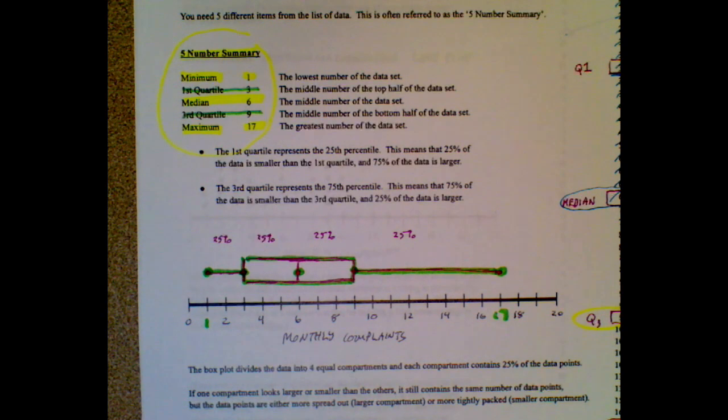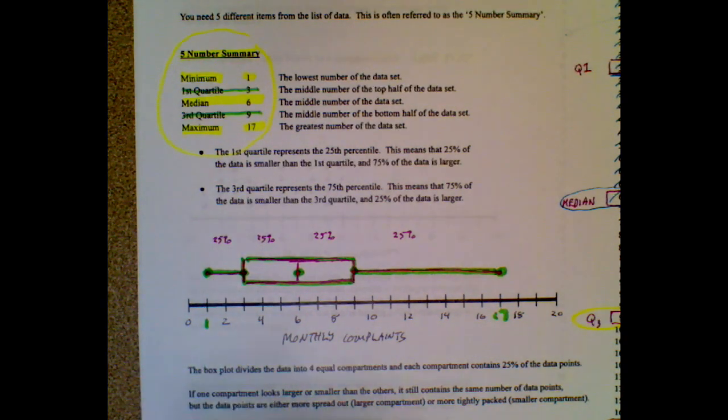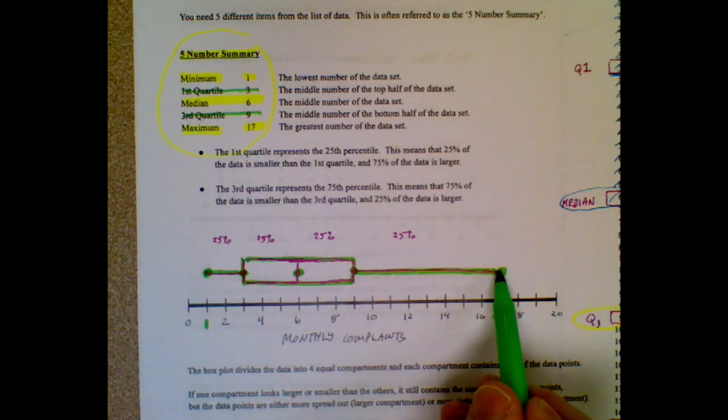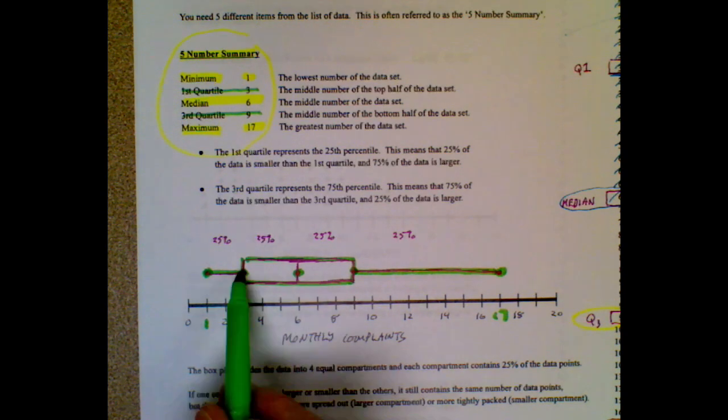This is your box plot, but what it does is it categorizes your data into 25% chunks. This bottom chunk has 25% of the data. This top chunk has 25% of the data. Same thing with this compartment and this compartment.